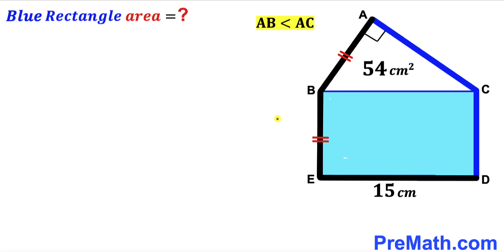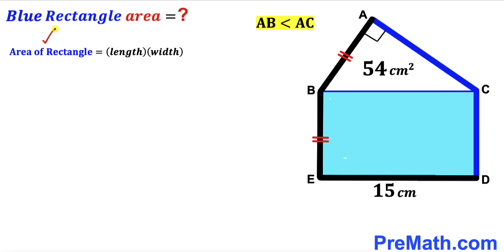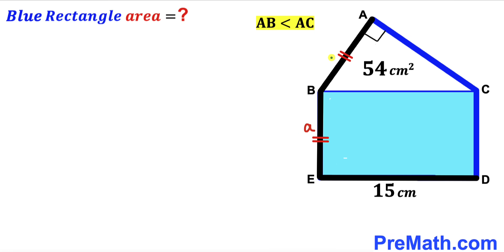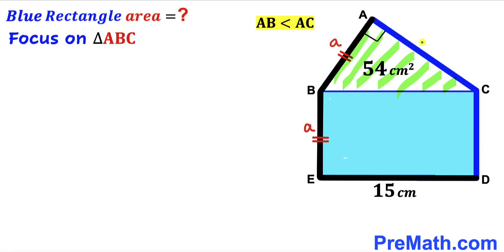Let's get started. Since we are interested in calculating the area of this blue shaded rectangle, let's recall the area of rectangle formula: area is always equal to the length times the width. We know the length of this blue rectangle is 15 centimeter, and I'm going to label the width as lowercase a. We know that side AB length equals BE length, so if BE is lowercase a, then the AB side is going to be lowercase a as well.